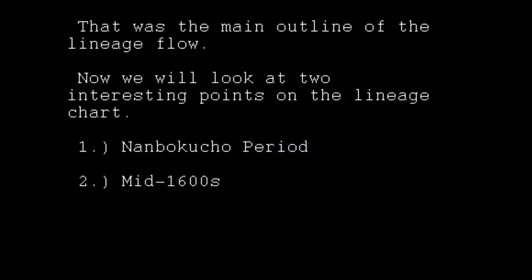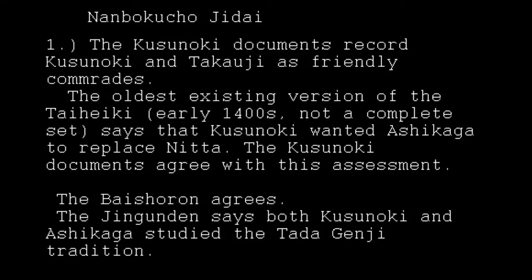Now, having looked at this brief overview of the line, we are going to look at some interesting points on the lineage charts showing other sources of Kusunoki tradition. This requires a decent knowledge of Kusunoki Masashige's history. One potential source for Tadaginji and/or Kusunoki tradition potentially comes through Ashikaga Takauji, which might confuse some people — but the Kusunoki documents record that Kusunoki and Takauji were friendly comrades.